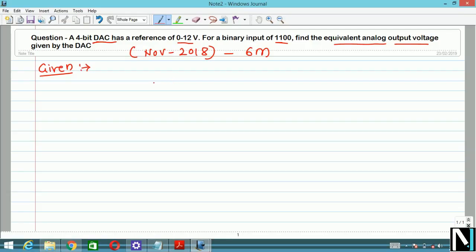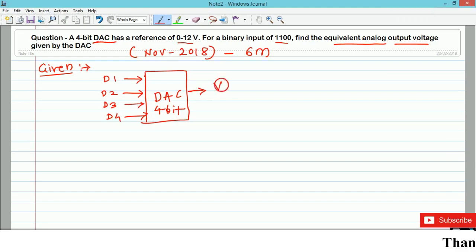In this problem, a DAC is given. DAC stands for digital to analog converter and this is a 4-bit DAC. 4-bit means it takes input from four different channels, suppose D1, D2, D3, and D4. So you have four digital inputs and this DAC is going to convert this digital input into the analog output voltage.